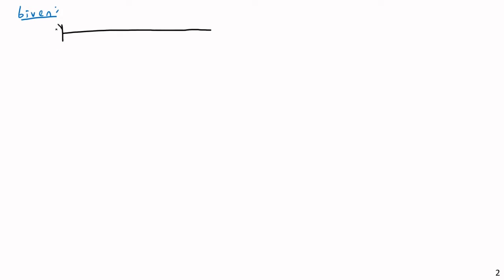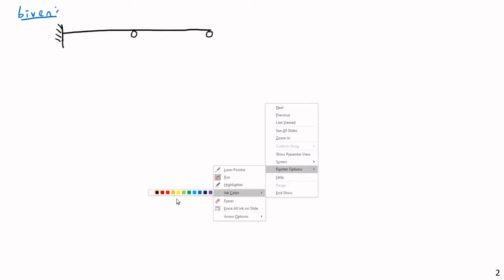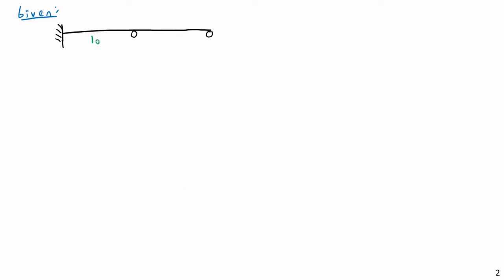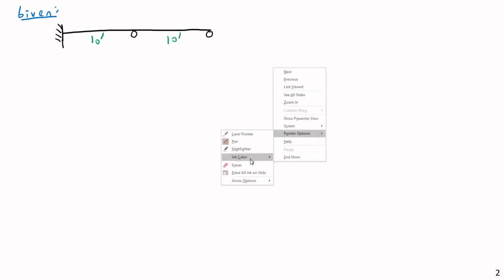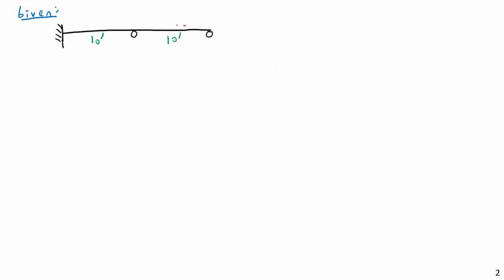On the left-hand side I'm going to have three reactions because I have a fixed support, and then two rollers. Each span will be 10 feet — the left span has a length of 10 feet and the right span also has a length of 10 feet. The initial load starts at zero and linearly increases up to a peak value of three kips per foot on the right-hand side.